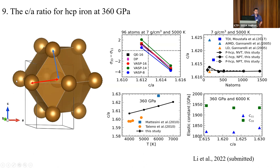To calculate the c/a ratio we can use different methods. In one method we run NVT simulations at a fixed volume and adjust the c/a ratio until the difference (σ₃₃ − σ₁₁) equals zero. Alternatively, we use thermodynamic integration: we vary the c/a ratio and use thermodynamic integration to calculate the Helmholtz free energy, finding the c/a ratio at which the Helmholtz free energy is at its minimum.